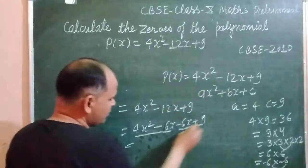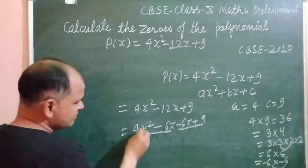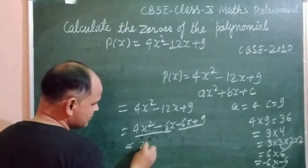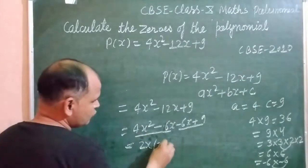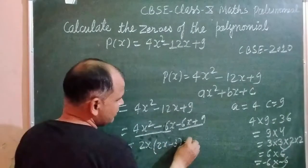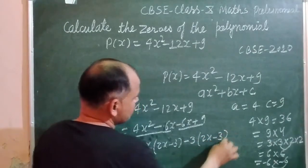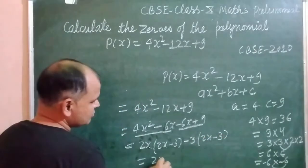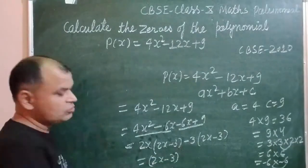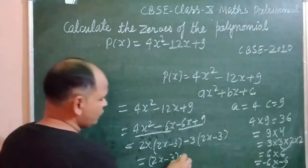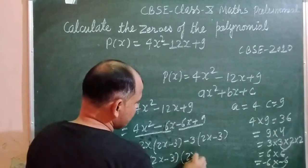Now we make two pairs and factorize it. Taking 2x common from here, we get 2x(2x - 3). And taking minus 3 common here, we get (2x - 3). So 2x - 3 is common from both. Therefore, (2x - 3)(2x - 3).